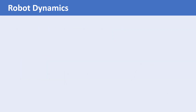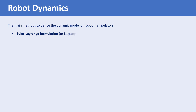There are different ways to calculate the dynamic model of a mechanical system. The two methods used to derive the dynamical model of robot manipulators are Euler-Lagrange formulation, also known as Lagrangian formulation, and Newton-Euler formulation. The complexity of the analysis using Newton-Euler formulation increases with the number of joints in the robot. It is usually easier to use the Lagrangian formulation, and therefore we will use this method in this video.